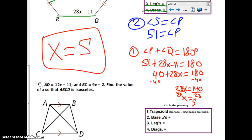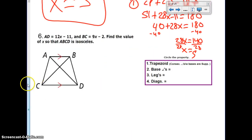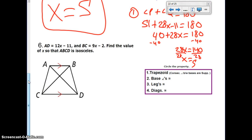Now, this last problem is supposed to be a doozy, but trust me, it's not that bad at all. It says that AD, which is a diagonal, is 12X minus 11, and BC, which is a diagonal, is 9X minus 2. It says find the value of X so that ABCD is isosceles. Well, what's it say for our properties? In order for it to be an isosceles trapezoid, our diagonals have to be congruent. So this problem, while it might look confusing, is actually really easy.